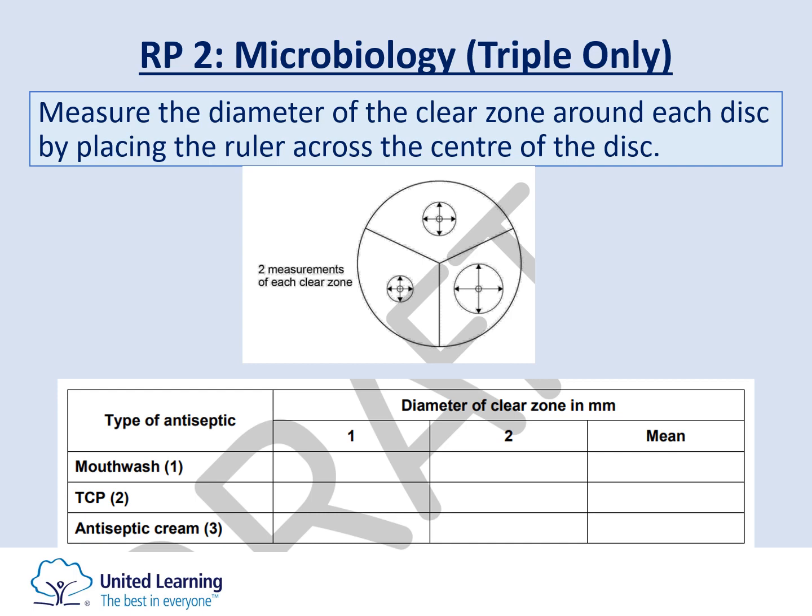For your exam, you need to be comfortable measuring the diameter of the clear zone of inhibition, including the antiseptic disc in that measurement. Measure from one end of the circle to the other to get the diameter, then divide by 2 to get the radius and use the equation pi r squared to calculate the area of the circle. Record the areas of the zones and use those findings to conclude which antiseptic was most effective at killing bacterial growth.